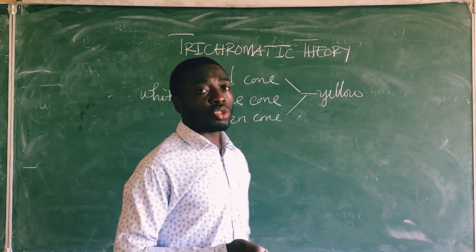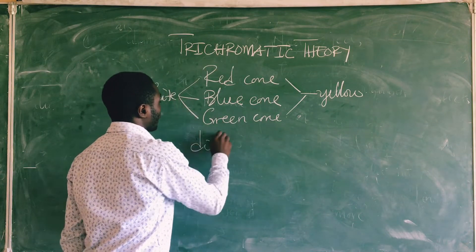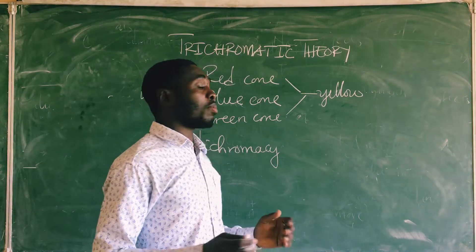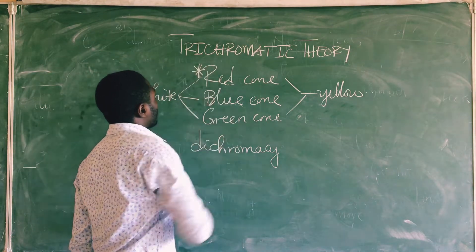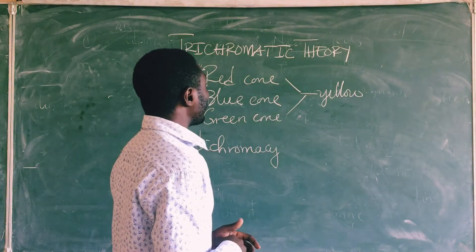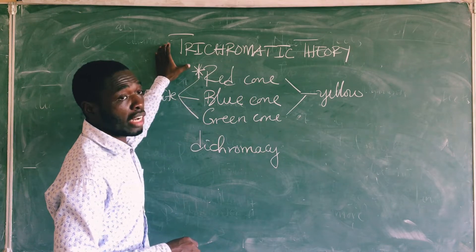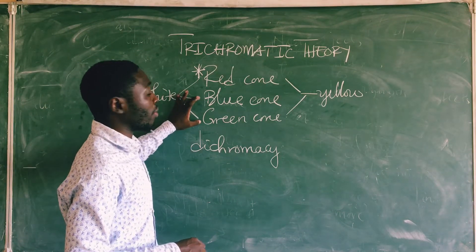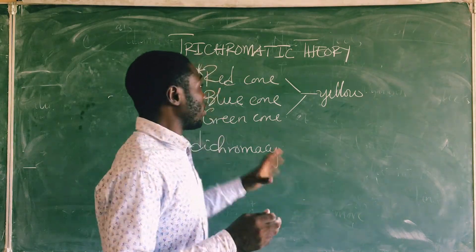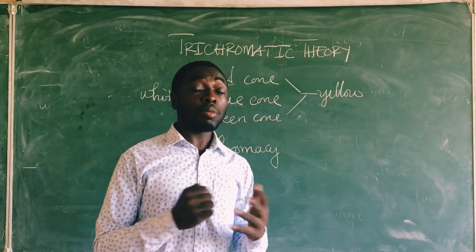What if there is a mutation in one of these genes? Then the person can have dichromacy, meaning just two of the cones are going to be functional. For example, if the person is born without the gene for the red cone, or if there is a mutation in the gene for the red cone, then the person can only have the blue and the green cone. This means the person is going to be colour blind for that particular colour and might not be able to see red.